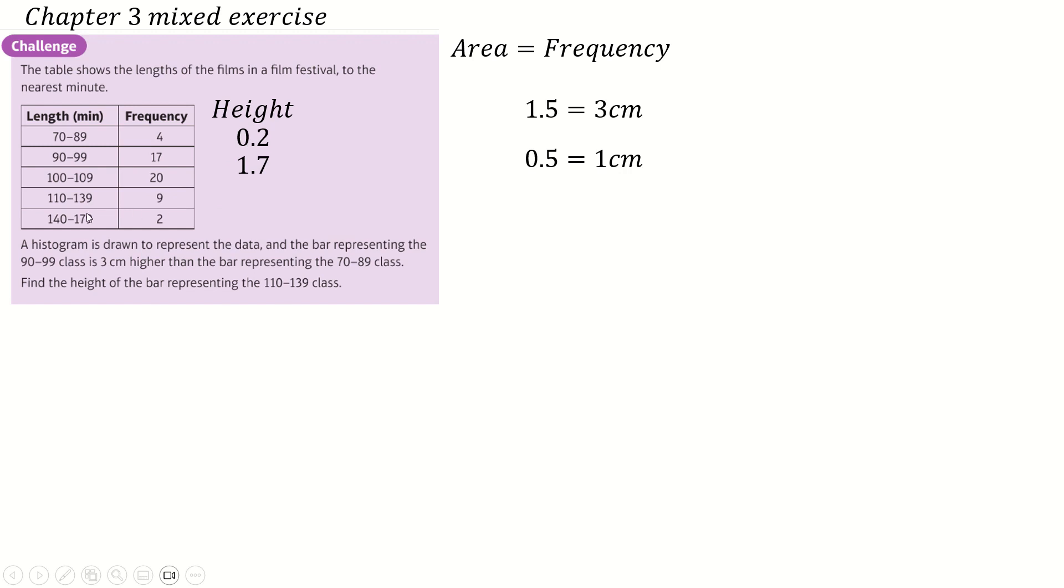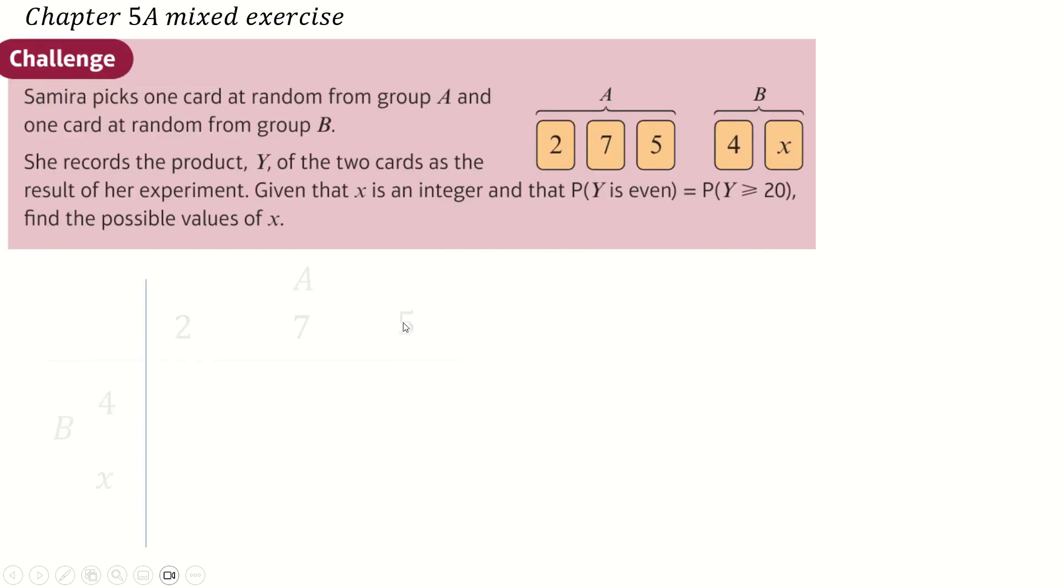I'm thinking about this one here. That's got a height of 9 divided by 30, which is 0.3. Well, 0.1 is going to be 0.2 centimetres, so times by 3, you get 0.6 centimetres is the height of this bar here, according to my maths there.